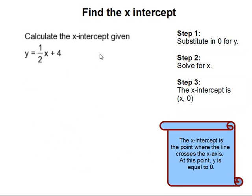The next problem, we are going to find the x-intercept given the following equation. The x-intercept is the point where the line crosses the x-axis, and at this point, y is equal to 0.